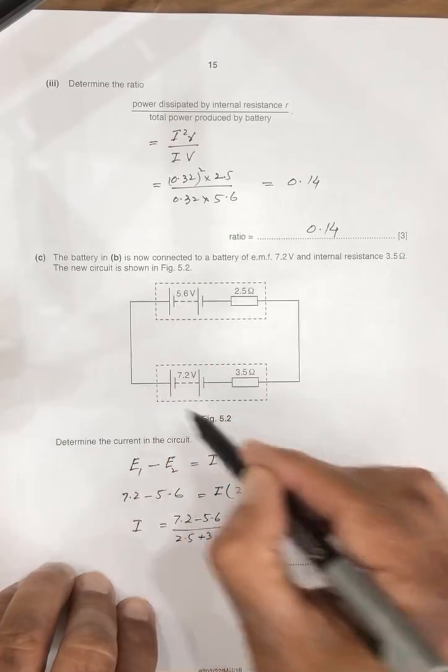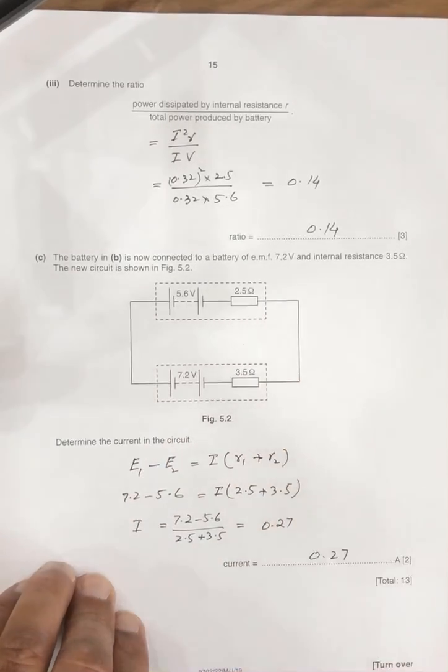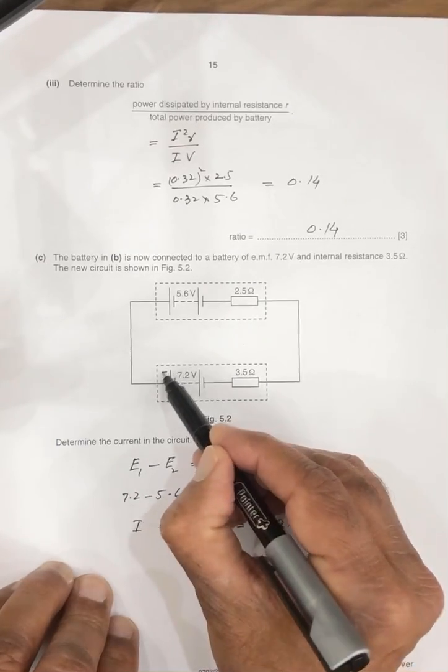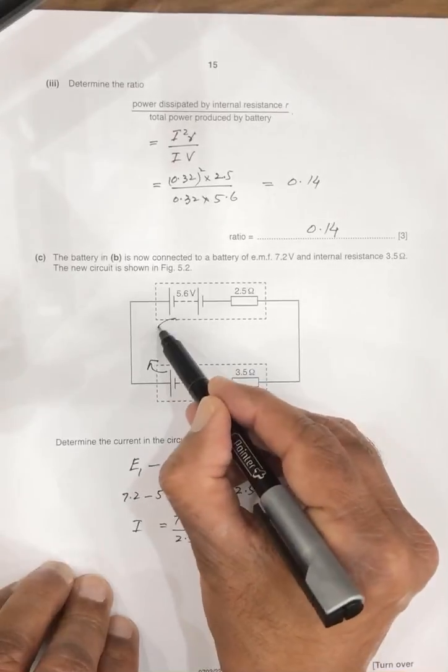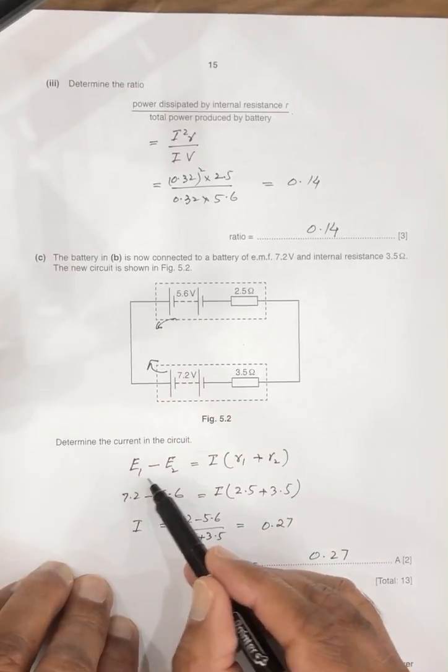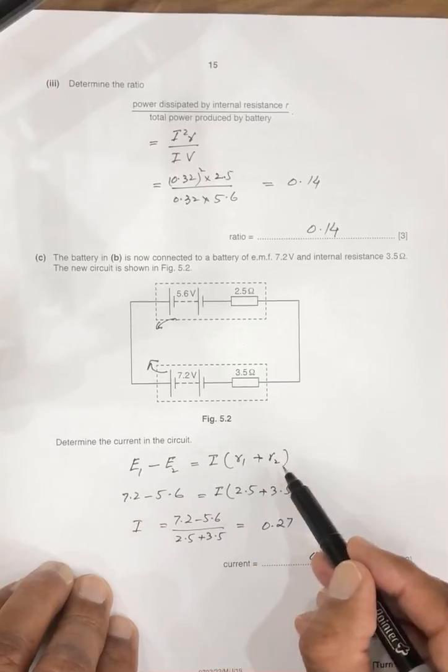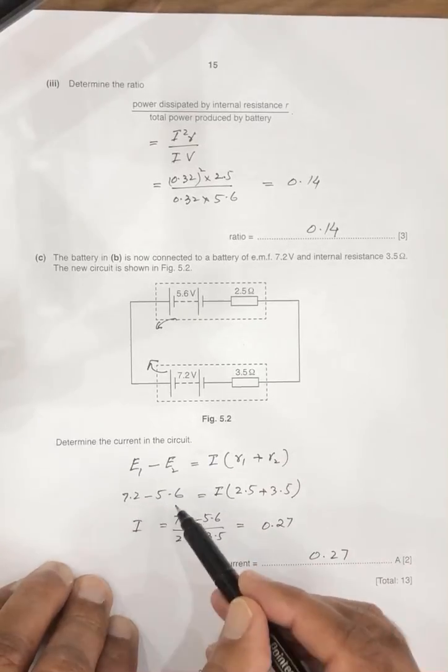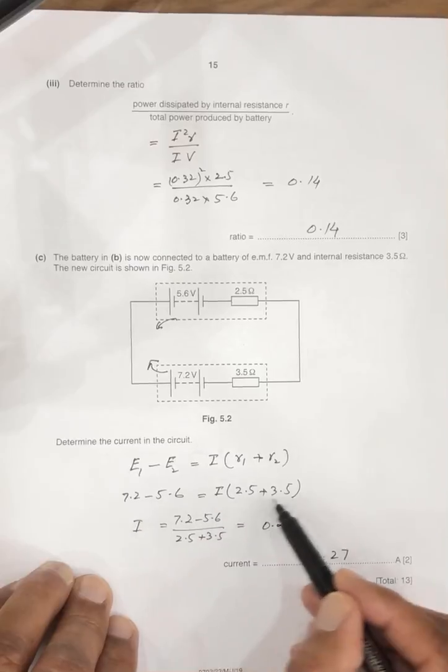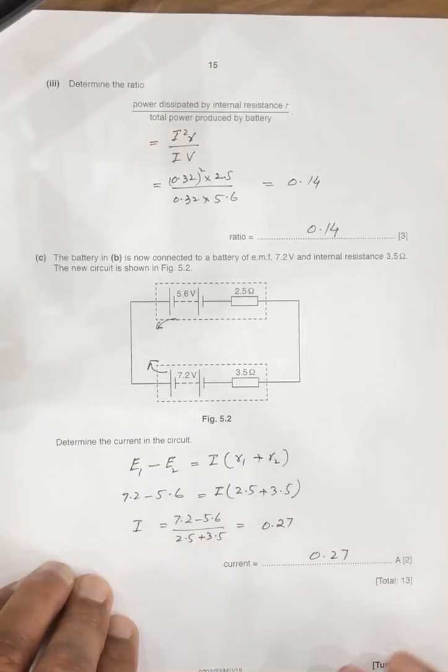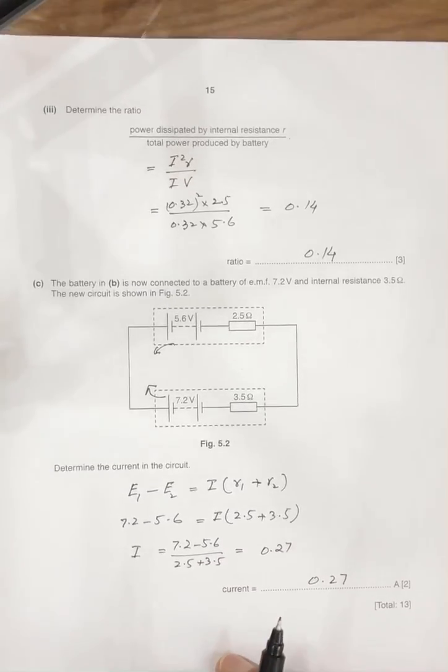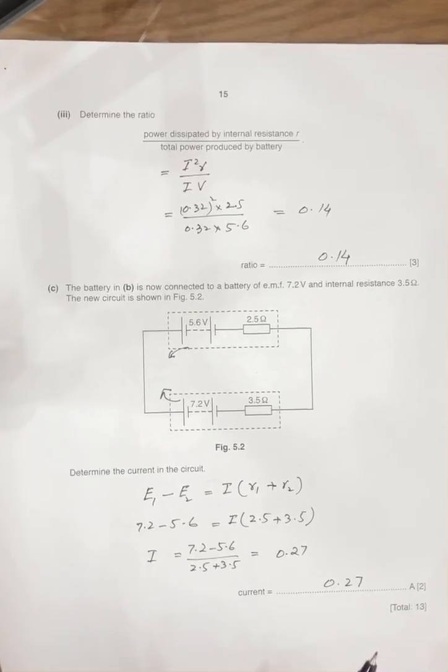Now, in this question, two batteries, two resistors are connected in series according to the Kirchhoff second law. So this battery is giving potential in this direction, this is giving this direction. So we can write E1 minus E2 is equal to I R1 plus R2. So 7.2 minus 5.6 I, sum of the resistors. So I becomes 0.27. So this is the answer for the current.